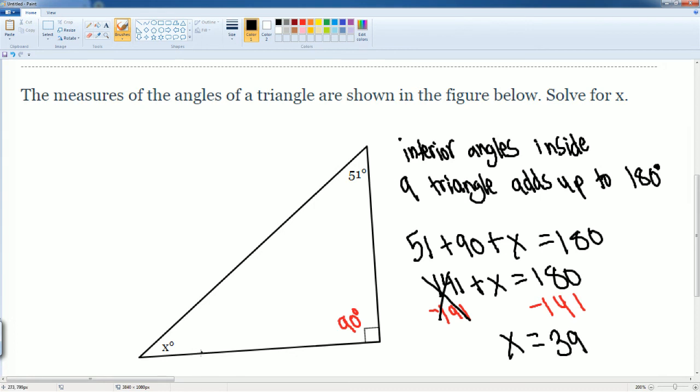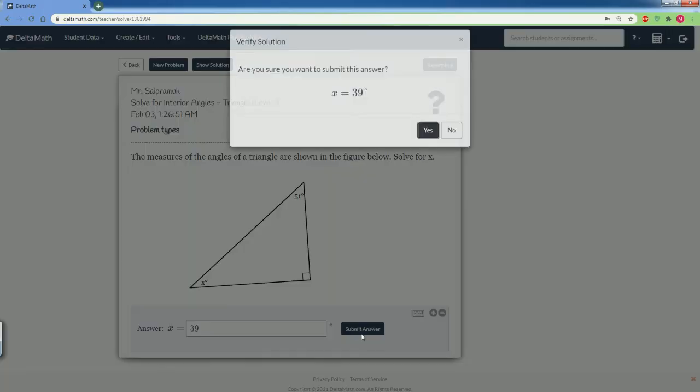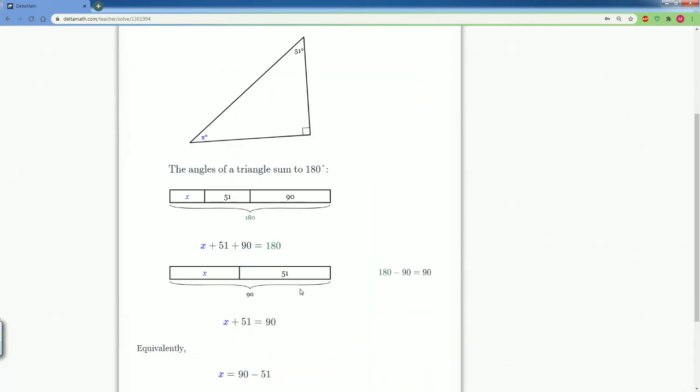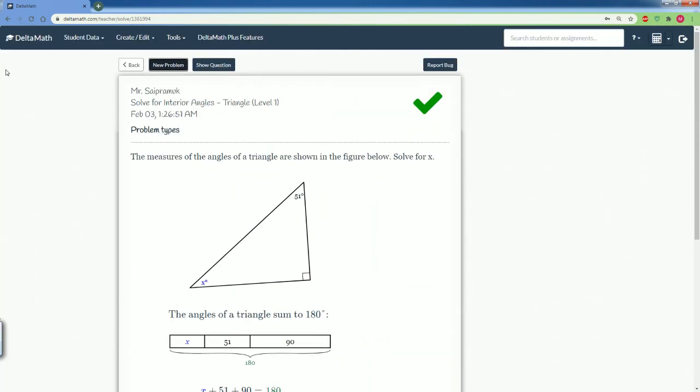So this angle here is 39 degrees. Let's check our work: 39. We did it correctly, good job! That's it - that's how you solve for the interior angles within a triangle, level one.